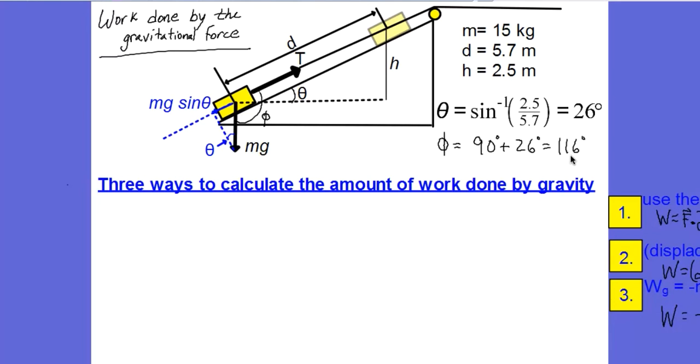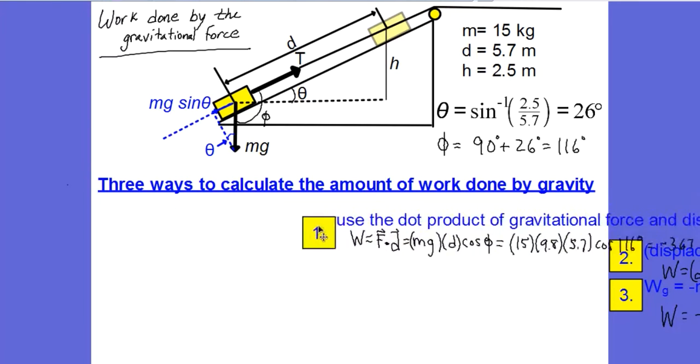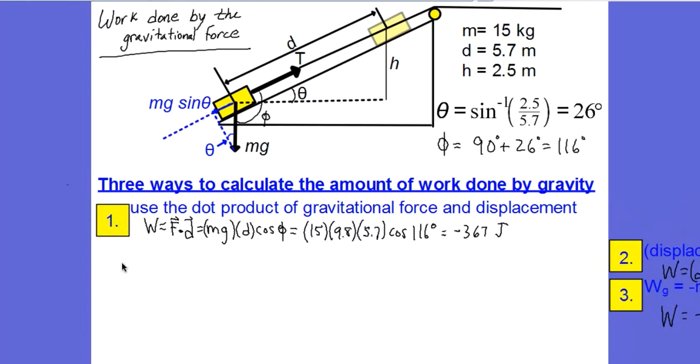It's really basically the same way all three times, but it's just different ways of thinking about it. So the first way, like we've been saying, use the dot product between the force and the displacement. So the force is the weight, the displacement is d, and we showed that the angle between the force and the displacement is 116 degrees. So the cosine of 116, and that multiplies out to negative 367 joules.